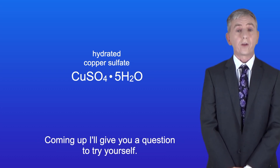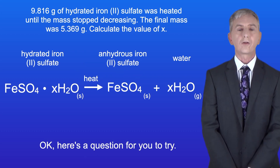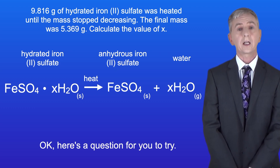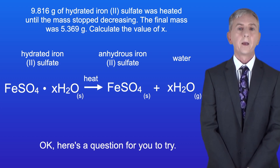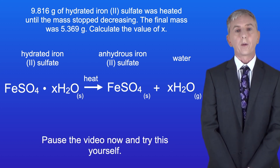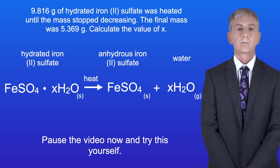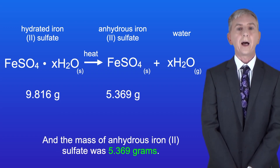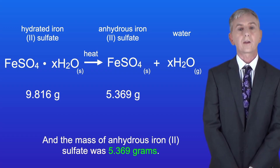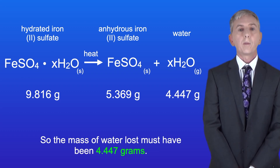Coming up, here's a question for you to try. 9.816 grams of hydrated iron sulfate (FeSO₄·xH₂O) was heated until the mass stopped decreasing. The final mass was 5.369 grams. Calculate the value of x — pause the video now and try this yourself. The mass of hydrated iron(II) sulfate was 9.816 grams and the mass of anhydrous iron(II) sulfate was 5.369 grams.